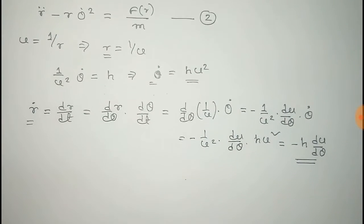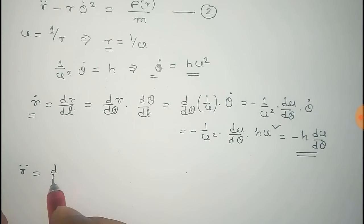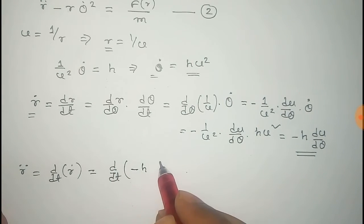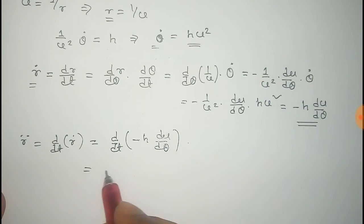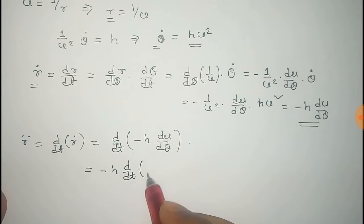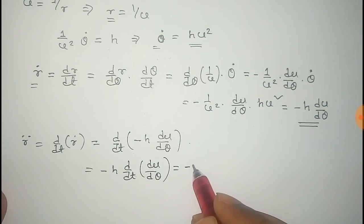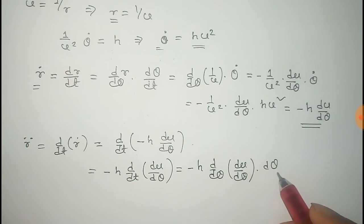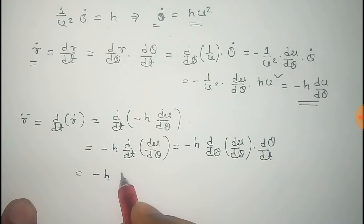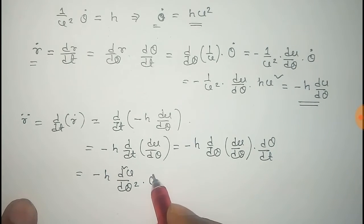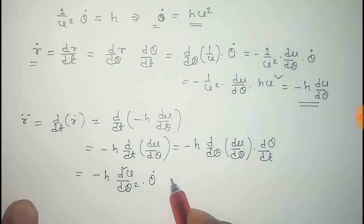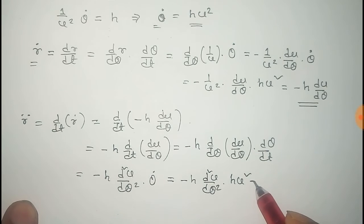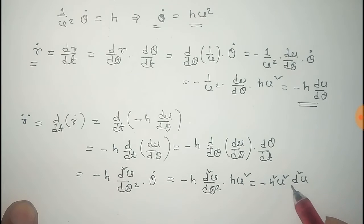Now we find R double dot, which equals d/dt of R dot equals d/dt of (minus H dU/dTheta). Since H is constant, this becomes minus H times d/dt of (dU/dTheta). We rewrite d/dt of (dU/dTheta) as (d²U/dTheta²) times (dTheta/dt), which is Theta dot. Substituting Theta dot equals H U squared, R double dot becomes minus H times (d²U/dTheta²) times H U squared, giving R double dot equals minus H squared U squared times d²U/dTheta².